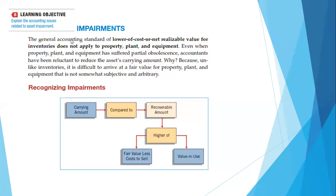Kemudian impairment. The general accounting standard of lower of cost or net realisable value for inventories does not apply to property, plant, and equipment. Jadi kalau di persediaan itu kita mengenal lower of cost or net realisable value, tapi di aset tetap kita tidak mengenal itu, tetapi dikenal dengan istilah impairment.